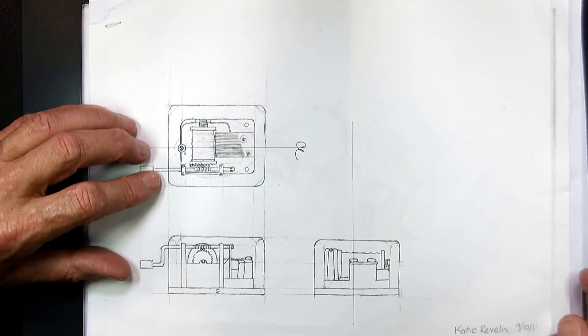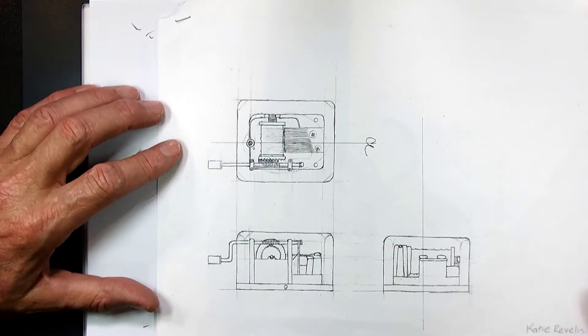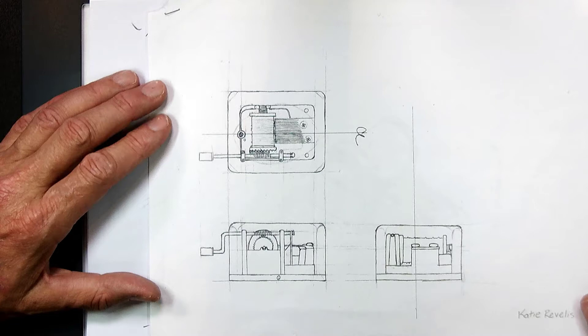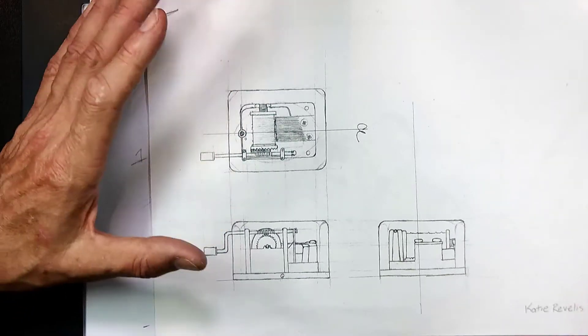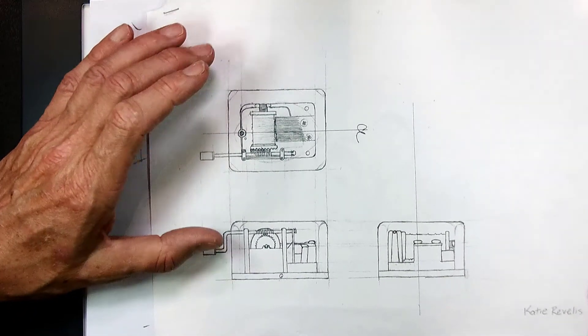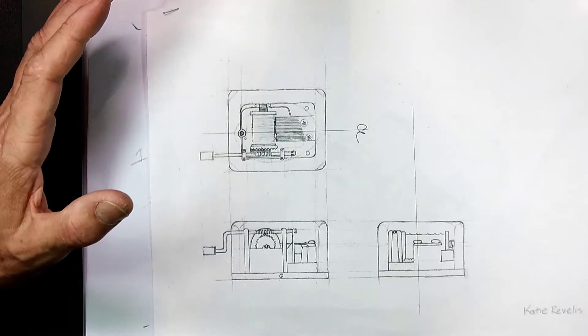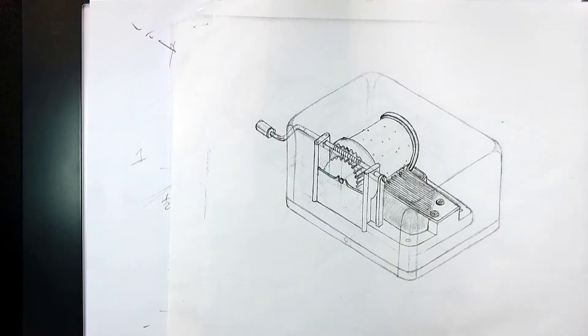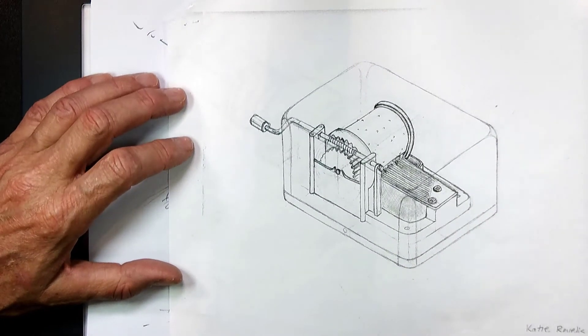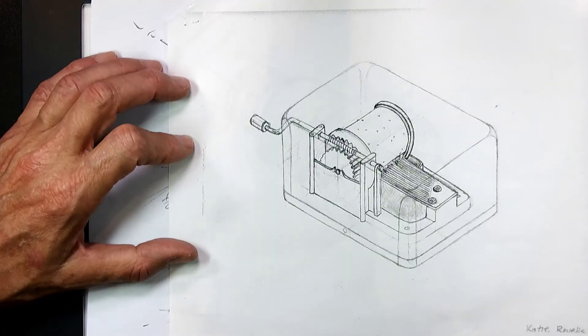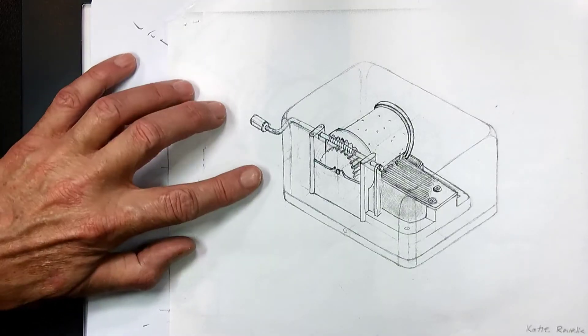Here's another set of orthographic drawings by a different student of the music box. This is lines, no shading, but it's equally, I think, equally effective. And here's another drawing of an isometric view of the music box.